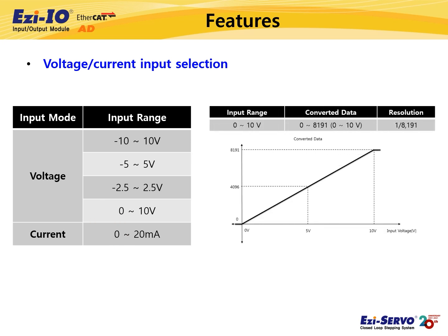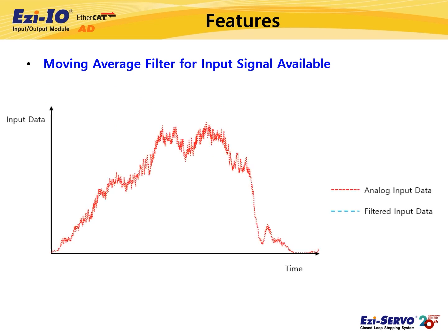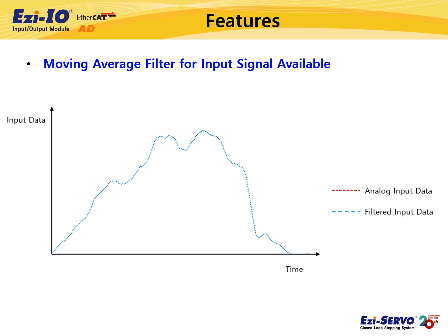Easy IO EtherCAT-AD converts analog input signals to digital data with a maximum resolution of 8191. For example, when the voltage input range is 0 to 10 volts, the analog input signals are converted to digital values 0 to 8191. In addition, a moving average filter is available for analog signal input to each channel. If the input analog data fluctuates significantly due to noise, the moving average filter can make the data smooth and reduce the effect of noise.